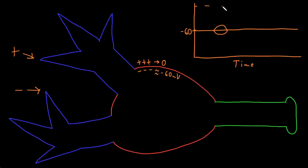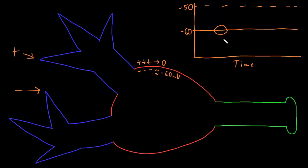Action potentials start when the combined effect of the graded potentials at any moment in time brings the membrane of the trigger zone across a certain value called the threshold potential. This threshold potential varies between neurons but is often around negative 50 millivolts, so that if the membrane potential at the trigger zone is moved from the resting potential — around negative 60 millivolts — over the threshold, an action potential shoots all the way down the axon. This adding together of graded potentials is called summation, and summation at the trigger zone is how neurons process information from their inputs.